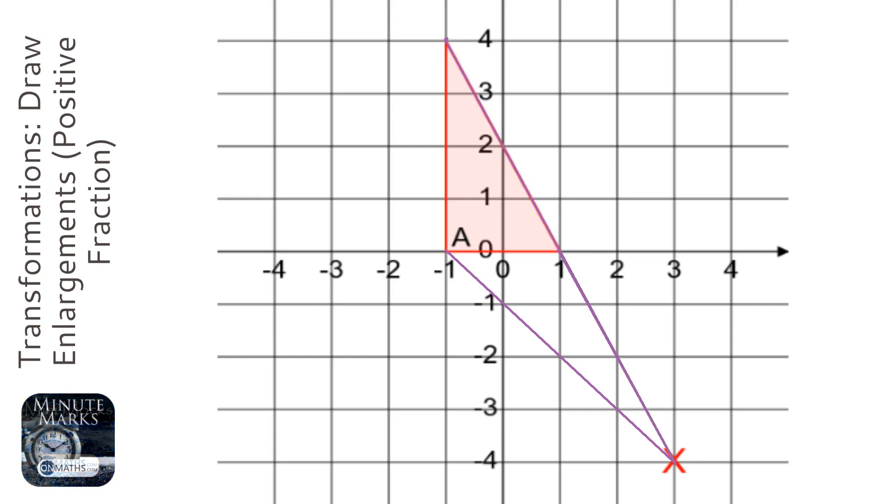Now when it's a scale factor 1/2 from the center of enlargement, it means that if it was, say, 4 diagonals away, it would now be 2 diagonals away.